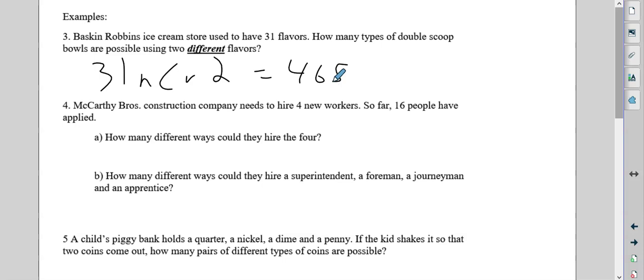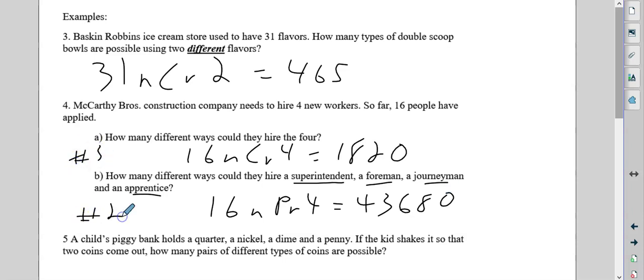McCarthy Brothers Construction Company needs to hire four new workers. So far, 16 people applied. How many different ways can they hire the four? So if they're just hiring four basic workers, that is going to be 16 NCR 4, and that means there's going to be 1,820 combinations. But if you're hiring specifically these four positions, well then that's going to be NPR. So we're going to choose number two on the calculator, and when there's positions involved, the number gets a lot bigger, quicker. So remember, this is number three on the calculator, and this is number two under NPR.